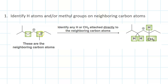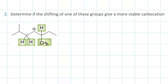This one and this one. Then we identify hydrogens and methyl groups on those neighboring atoms. The carbon on the left has two hydrides that we could shift. The carbon on the right has a hydride and a methide that we could shift. Now we've identified these four different groups we could shift — two different hydride shifts that would give the same result, or this hydride shift.